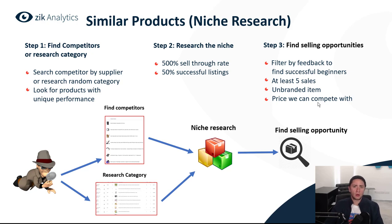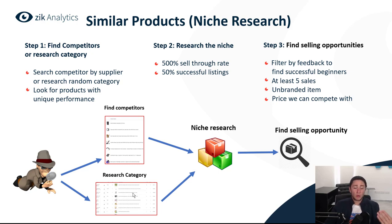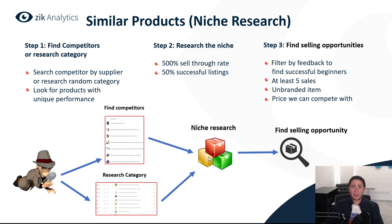As you can see in the picture: you find a competitor, go to the niche for category research. Once you find a product with unique performance, do a niche research by searching the keywords that define this niche, then look for a selling opportunity. Now I'm going to share my screen and give you a live example of how this looks when you do this method on Zeek.